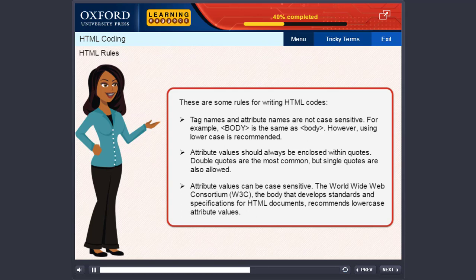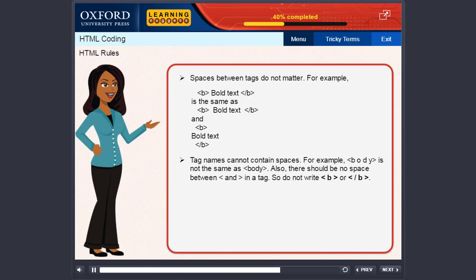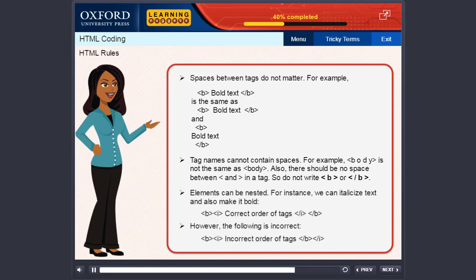Attribute values can be case sensitive. The World Wide Web Consortium, W3C, the body that develops standards and specifications for HTML documents, recommends lowercase attribute values. Spaces between tags do not matter. All the three examples below will give the same result. Tag names cannot contain spaces. Also, there should be no space between the opening and closing brackets in a tag.